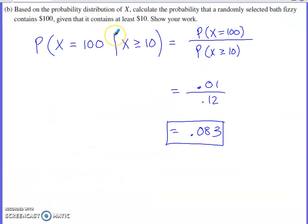Second part of this, based on the information we are provided with, calculate the probability that a randomly selected bath fizzy contains $100, given that it contains at least $10. Show your work. You hopefully see that word given and realize it's a conditional probability situation. So what's the probability that we have $100 in our fizzy, given that we already know it's greater than or equal to $10?